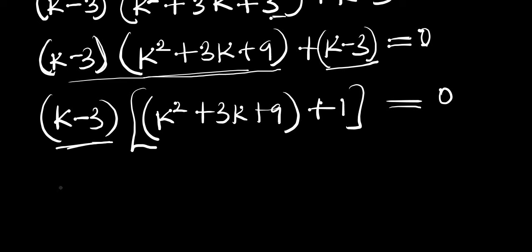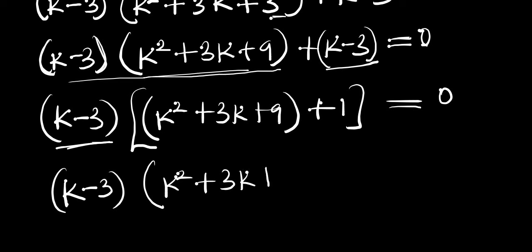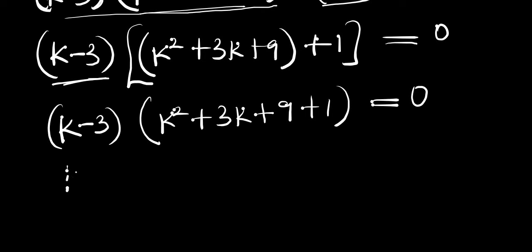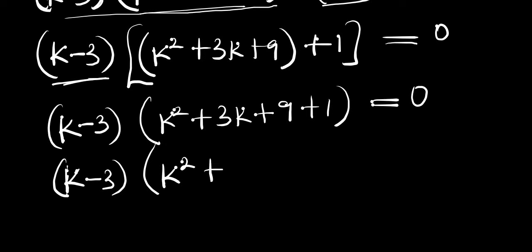Rewriting again, we have (k minus 3) into k squared plus 3k plus 9 plus 1, which equals zero. This gives us (k minus 3) times (k squared plus 3k plus 10) equals zero, since 9 plus 1 is 10.